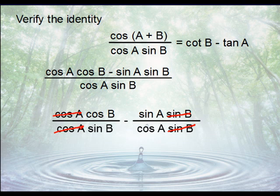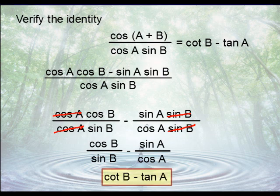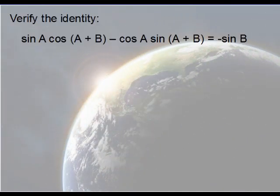So see what that leaves us. Leaves us with this: the cosine over the sine is cotangent, the sine over the cosine is tangent. And that finishes the problem.